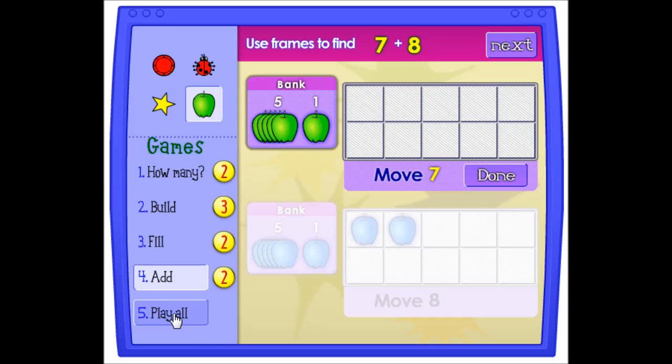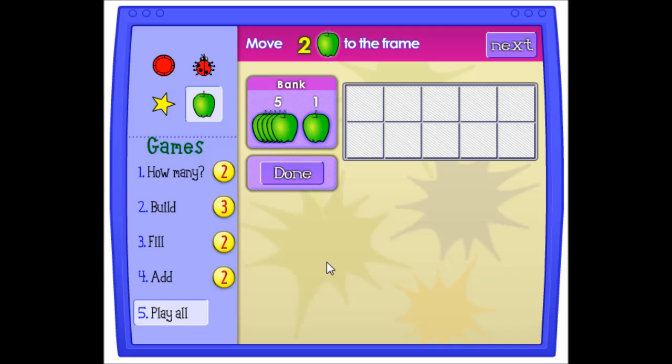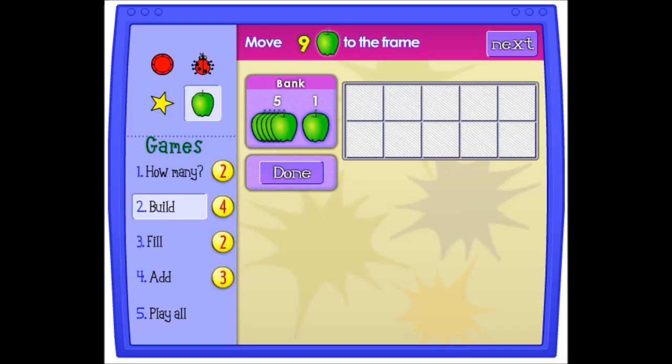So Play All mode gives you a shuffle of the four preceding games, and you can play this in any of the four modes.